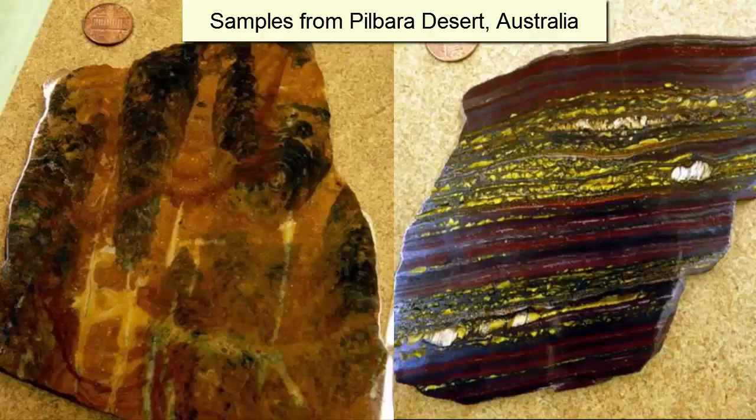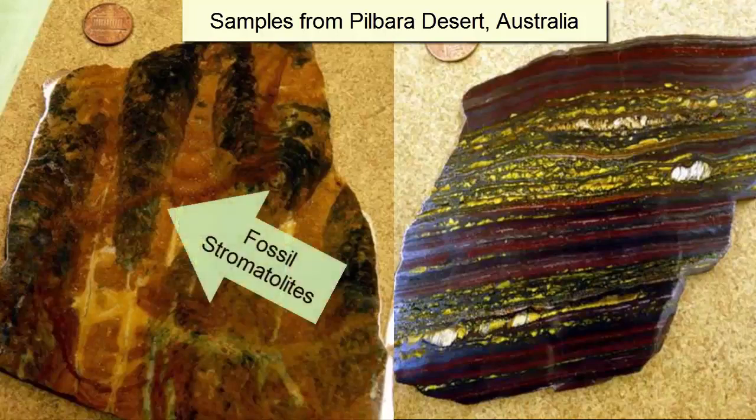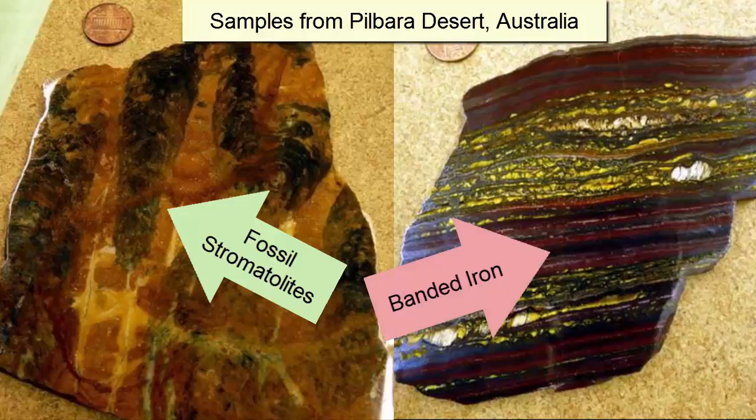Here are two samples from the Pilbara Desert, Australia. On the left you see small fossilized stromatolites, the oxygen producers, and next to it the banded iron.